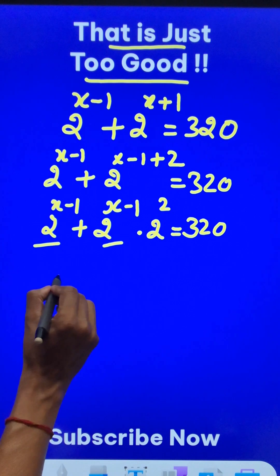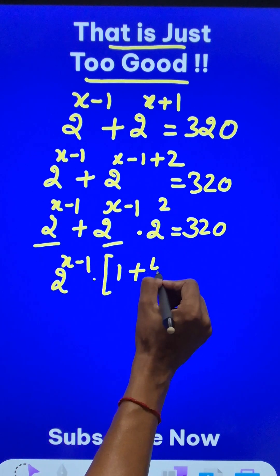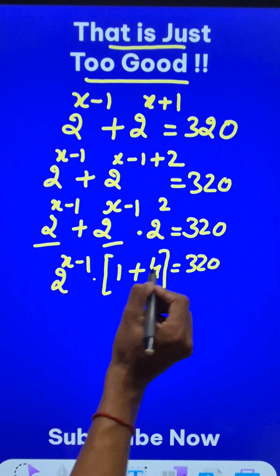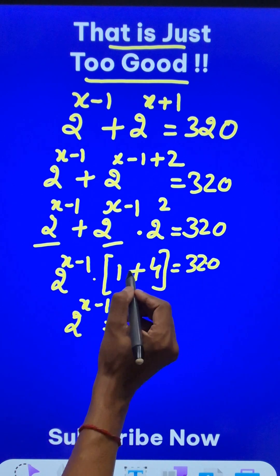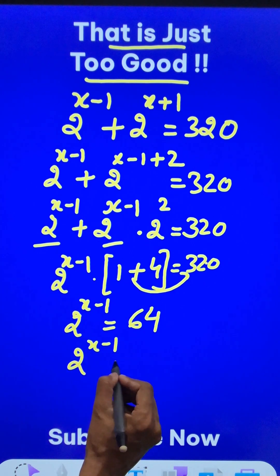Here you have a common factor 2 raised to power x minus 1 which gives you 1 plus 2 squared, that is 4, and you get 5 here. And when you divide 320 by 5 you get 64, and 64 can be written as a power of 2, right.